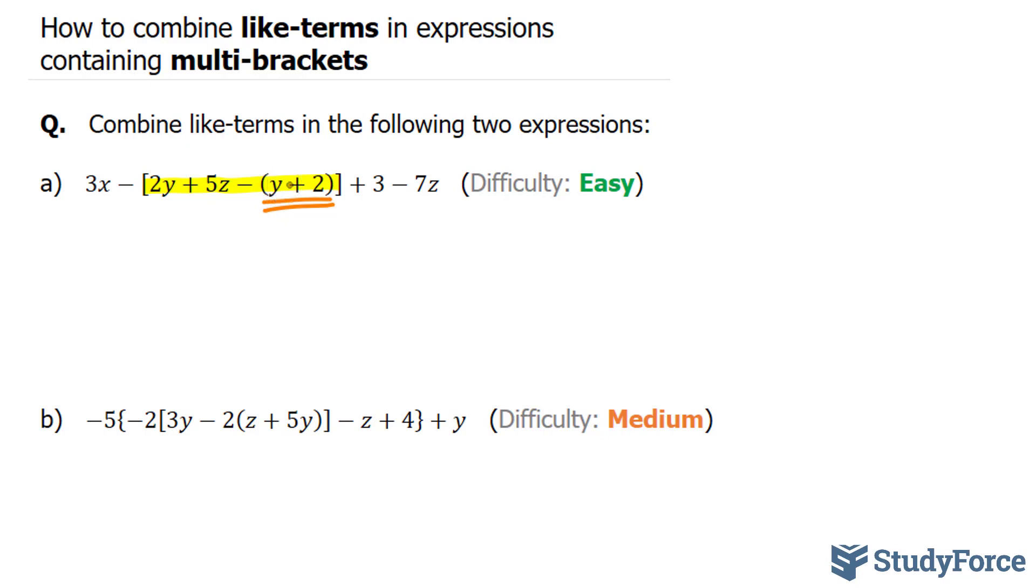So focusing on y plus 2, the term y and the term 2 are not like terms, so they can't be combined. Your next mode of action would be to multiply this negative, situated right outside of this bracket, into the two terms. This is known as the distributive law.